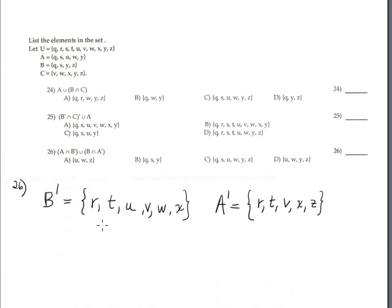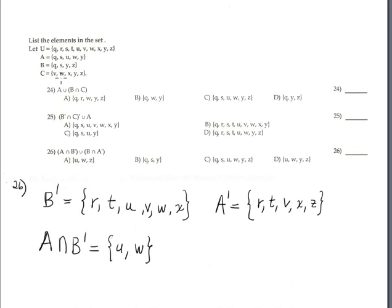Problem 26 is to find this expression. I found B complement and A complement. A intersection B complement is U and W only, because the intersection is the common element between A and B complement. Q is no, U is yes, W is yes, and Y is no.